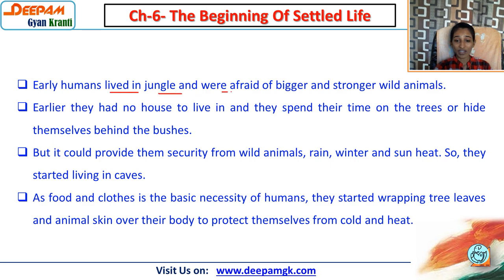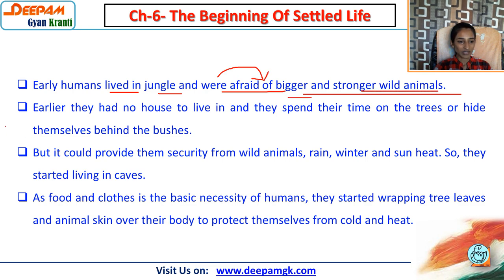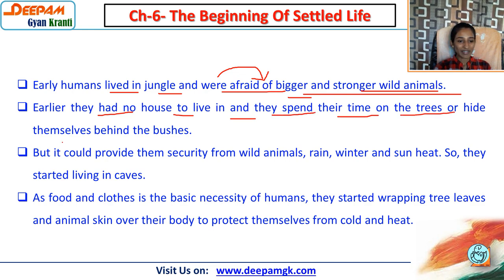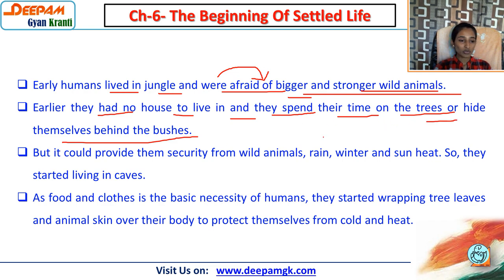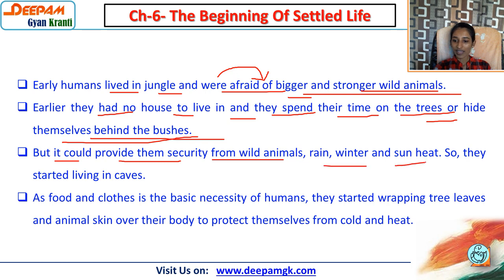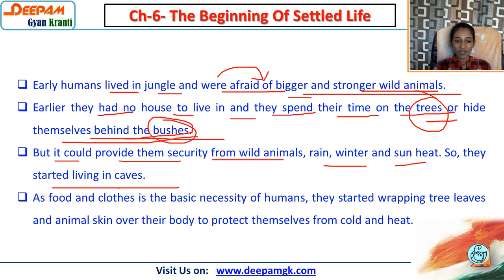Early humans lived in the jungle and were afraid of bigger and stronger wild animals. Earlier they had no house to live in and spent their time on trees or hid themselves behind bushes. As time passed, they started living in caves, which protected them from wild animals, rain, winter, and sun heat.